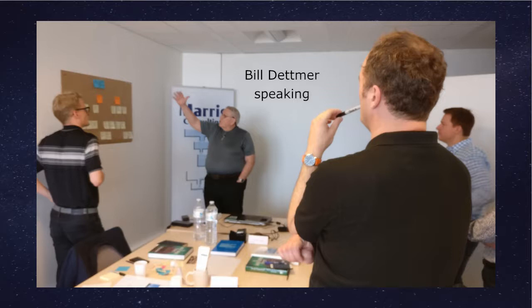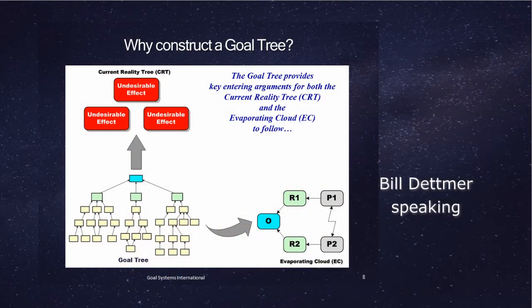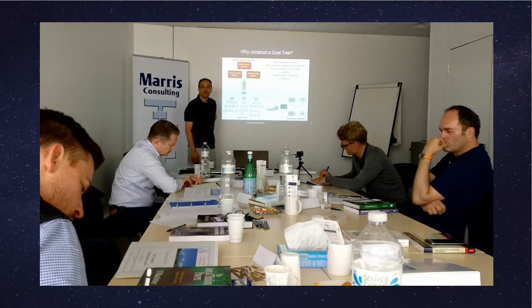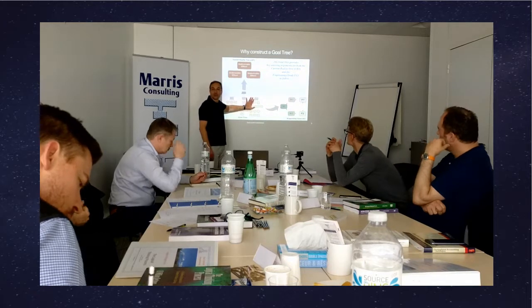Think about this: if you had four undesirable effects, it means your system is totally failing in all respects because you're not getting anything done right. In most cases, you'll have two or three — a couple of those critical success factors will be working out okay, and one is not, and because that one is not, you are not achieving your goal.